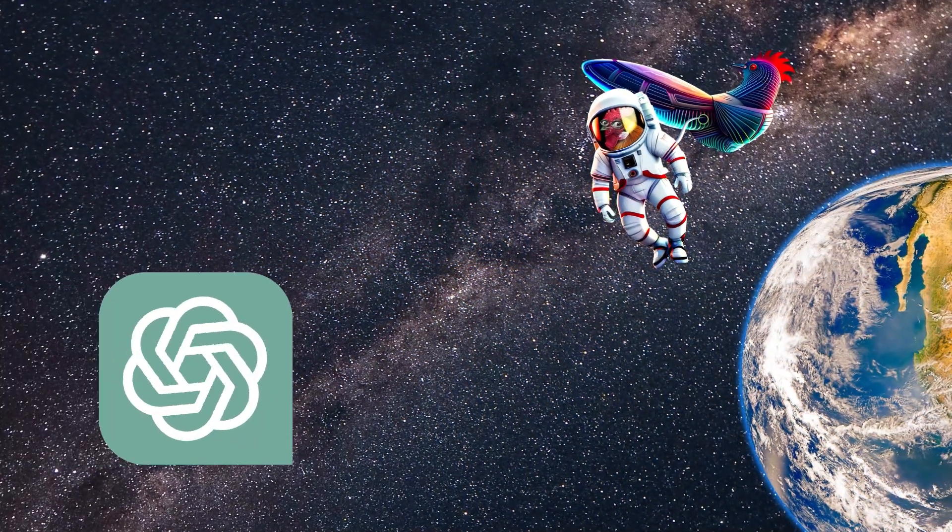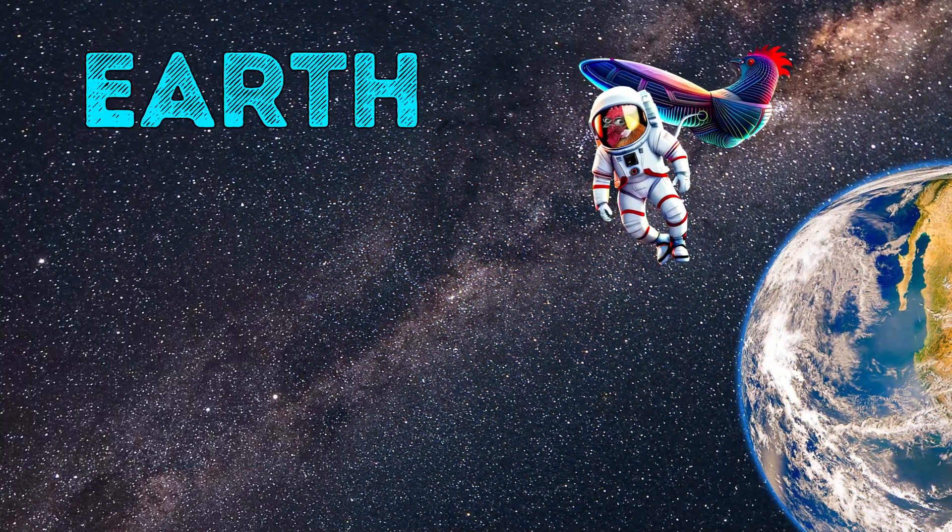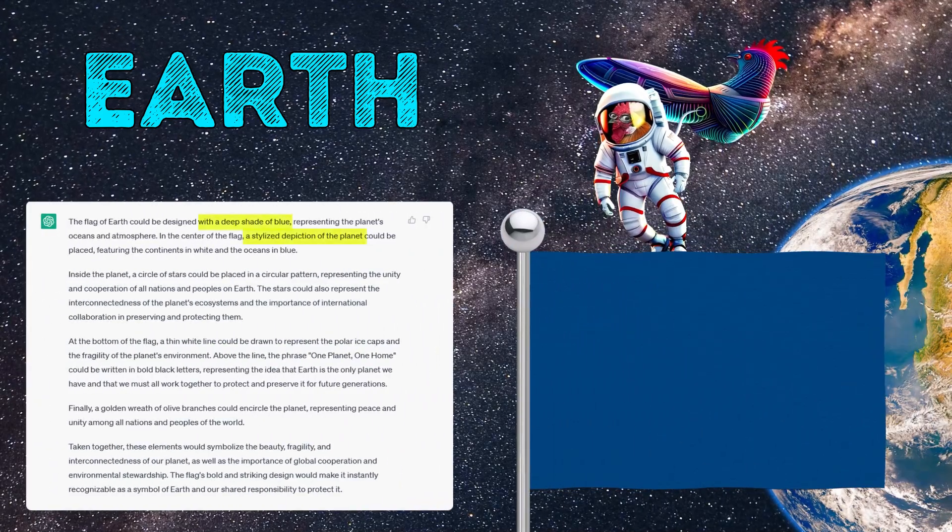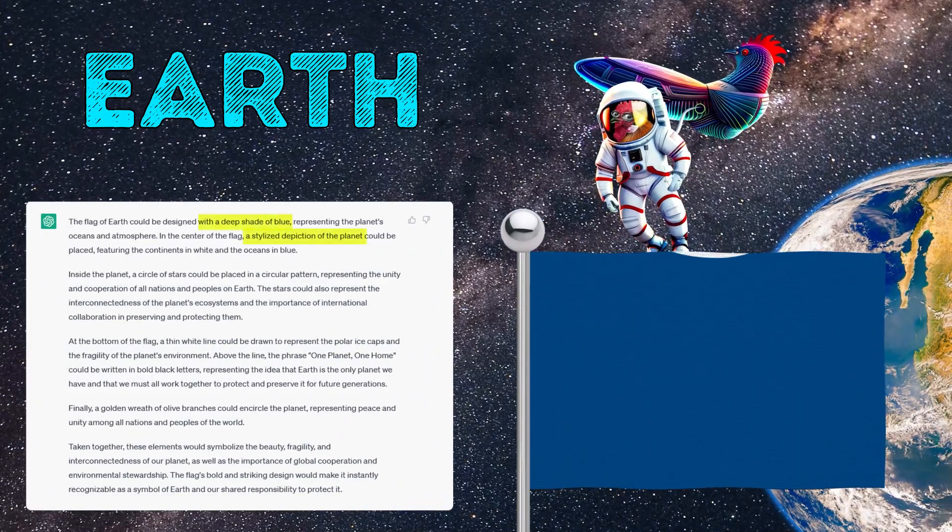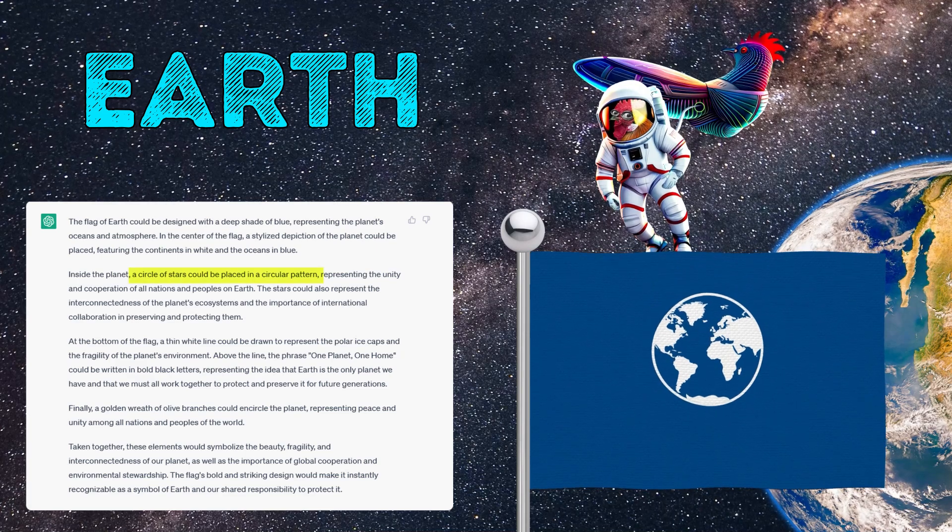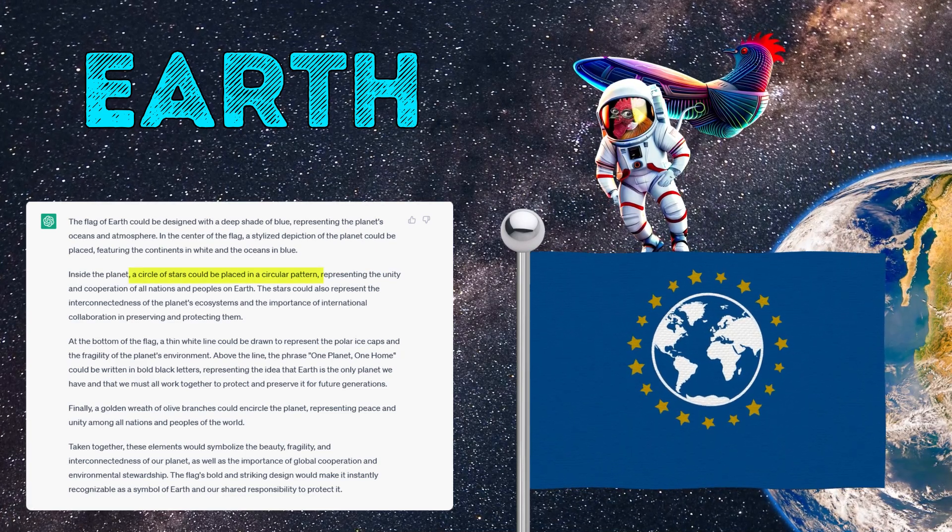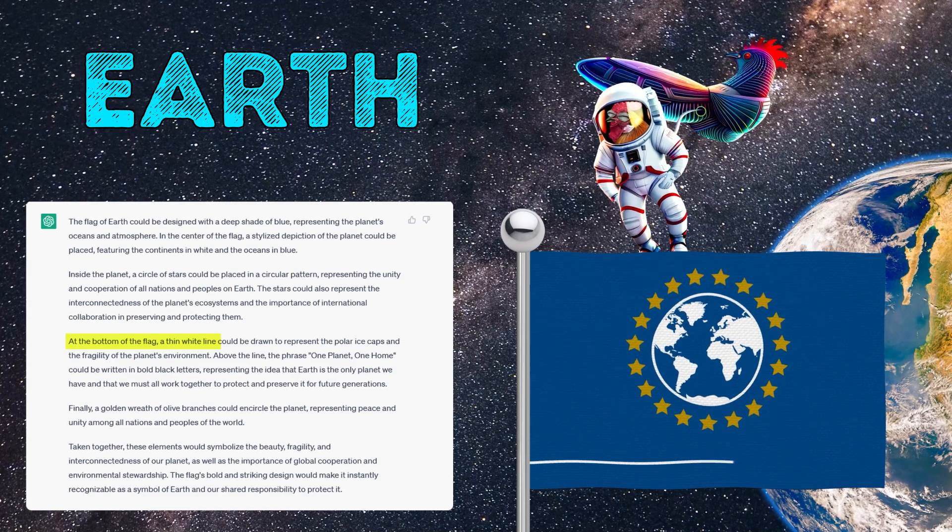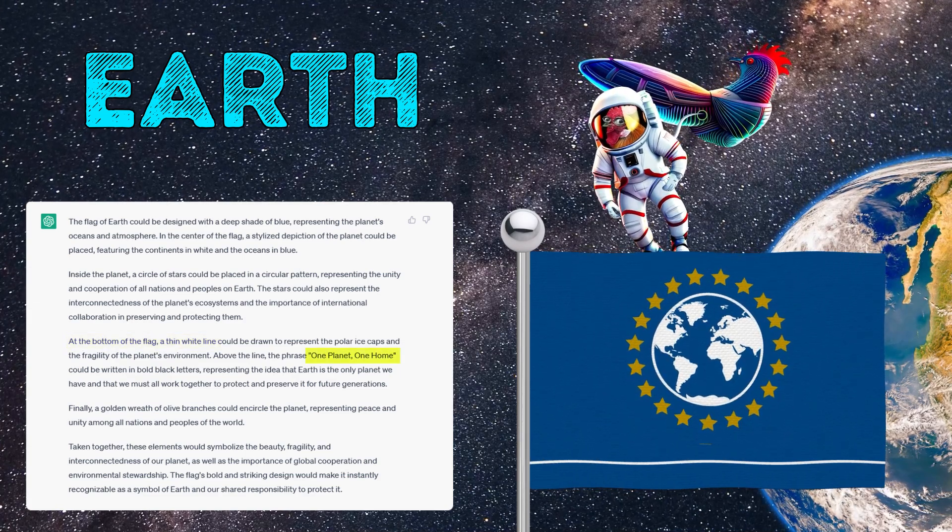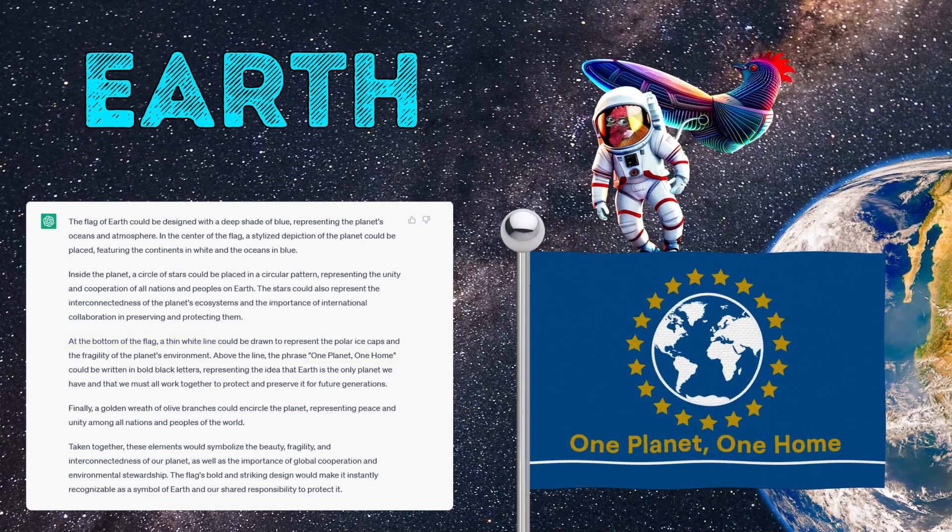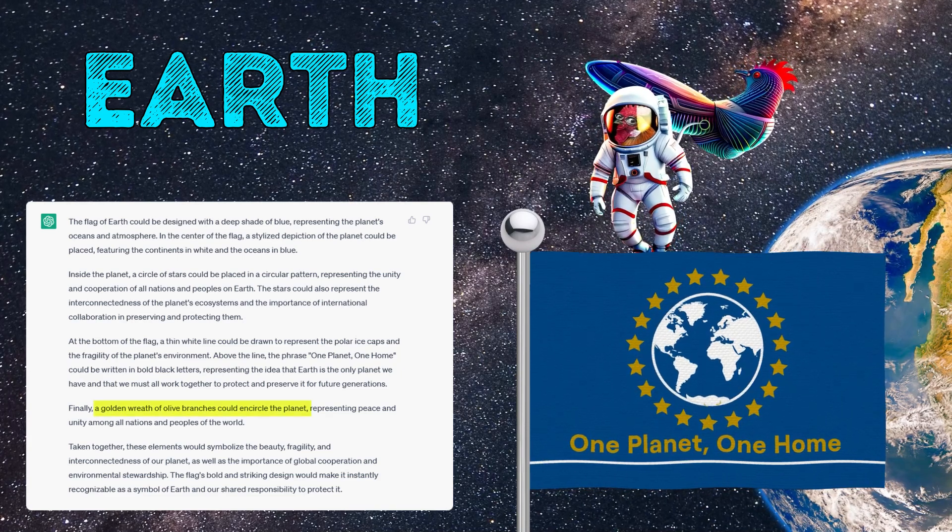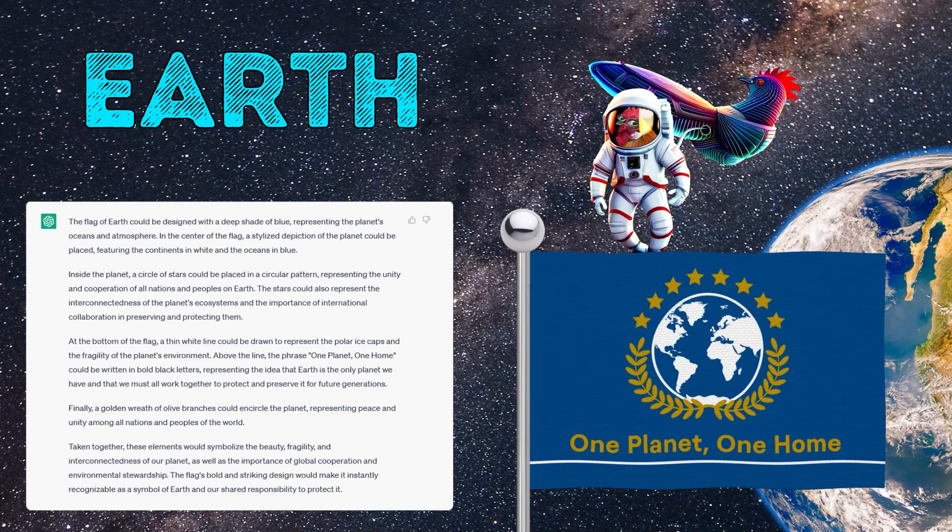Let's imagine what the flag of planet Earth would look like. For the background, we will use a deep blue color with a stylized image of planet Earth. Around the planet, we will place a circle of stars. At the bottom of the flag, we will draw a thin white line. Above the line, we write one planet, one home. A golden wreath of olive branches will encircle the planet.